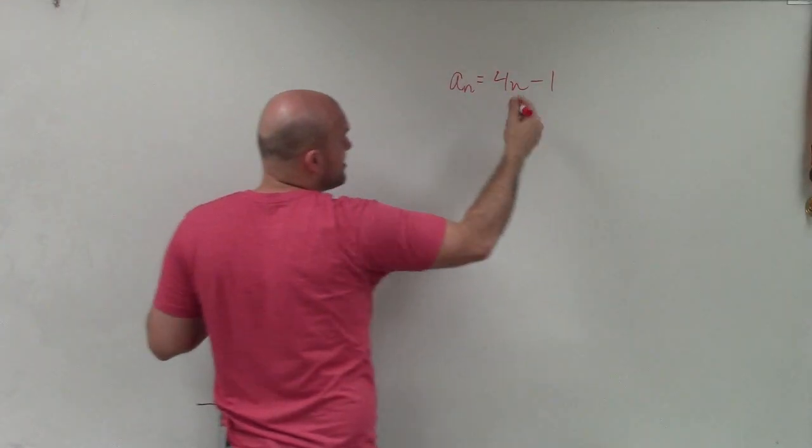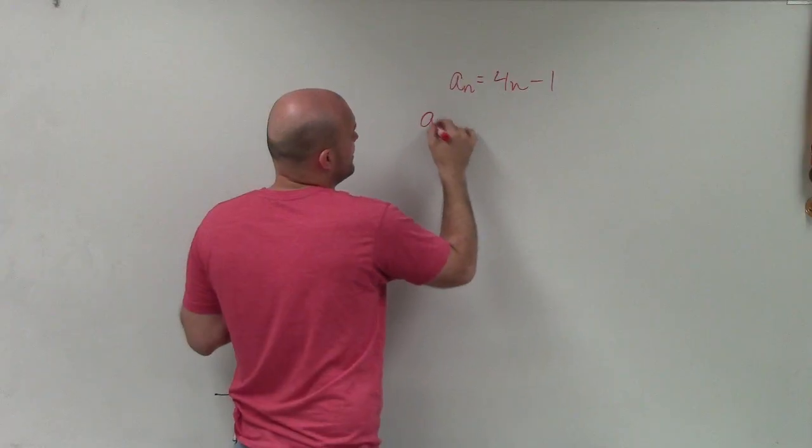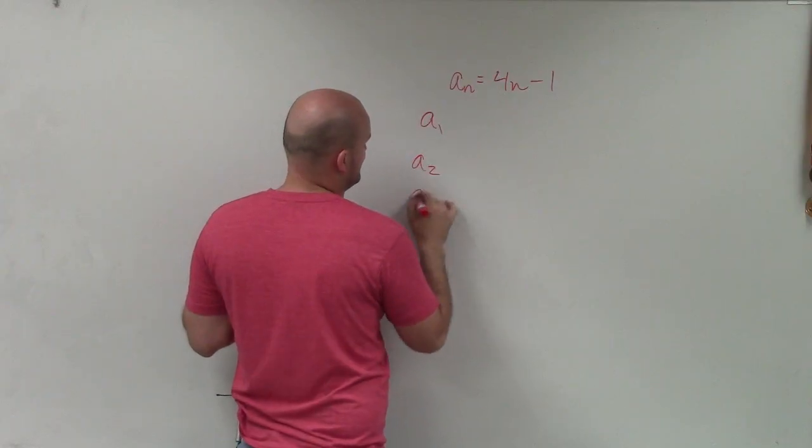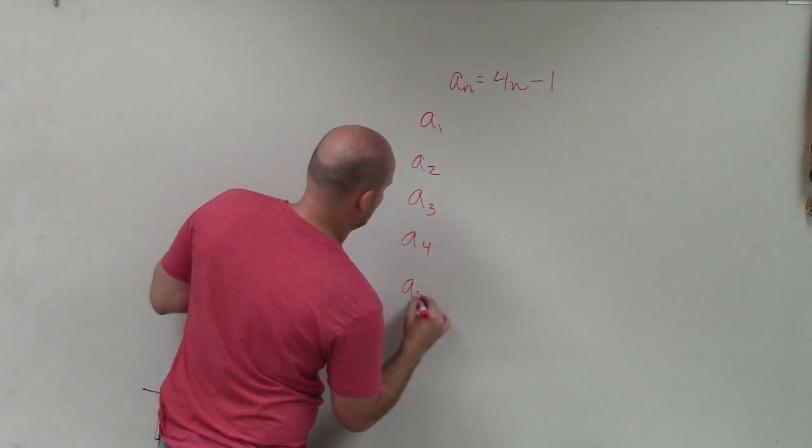So basically, we have a_n, which represents any term, and we want to evaluate a_1, a_2, a_3, a_4, and a_5.